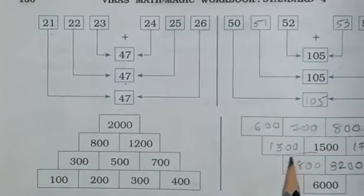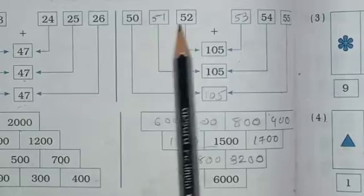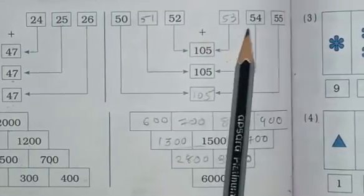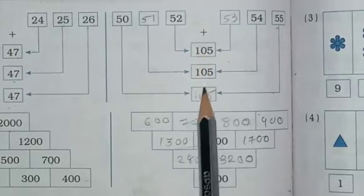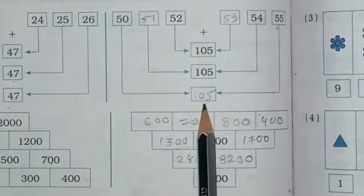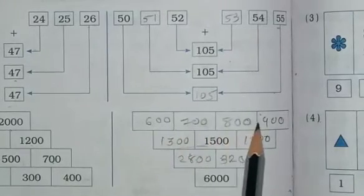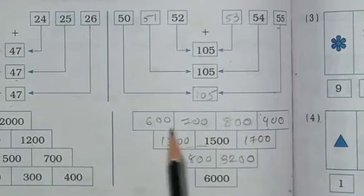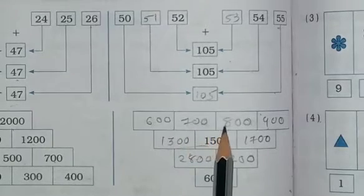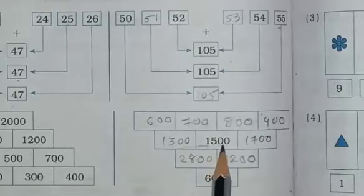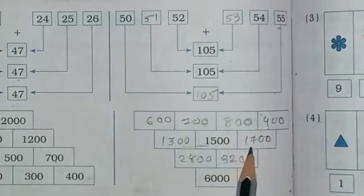वैसे यहां पे same आपको करना है. 50 से start करना है: 50, 51, 52, 53, 54, 55. तीनों का answer 105 आएगा, तो यहां पे भी 105. Next: 600, 700, 800 and 900. 600 plus 700 is 1300; 700 and 800 is 1500; and 800 plus 900 is equal to 1700.